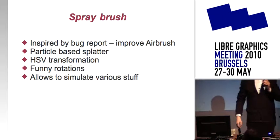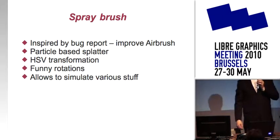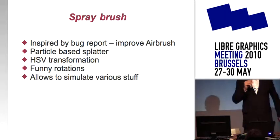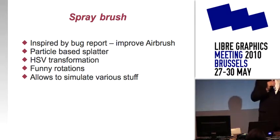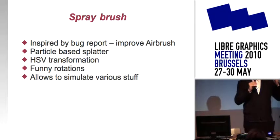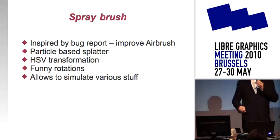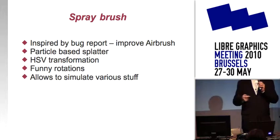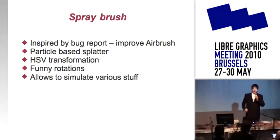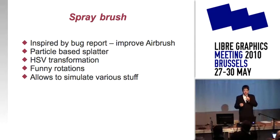The next brush engine is spray brush. Basically, it was inspired by a bug report — somebody said our airbrush sucks. So I decided to make something new and different from the usual way of doing airbrush. The airbrush in different software works by having some brush mask footprint with opacity that graduates, creating the airbrush effect. I decided to implement it differently with a particle-based model: you define some area of your brush and splatter some particles in that area. The particle can be anything — texture, shape, or pixel.